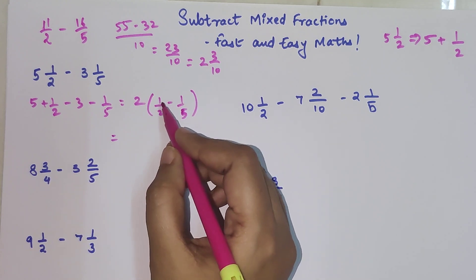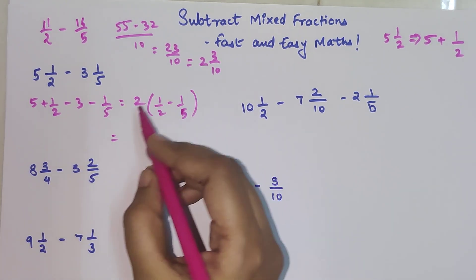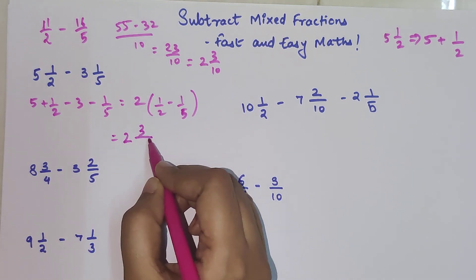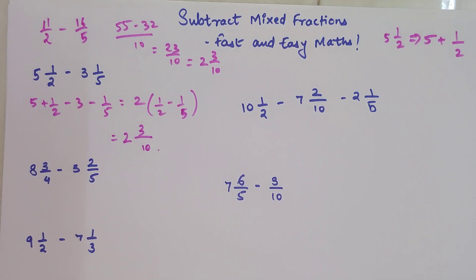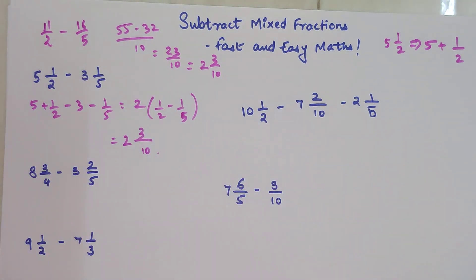We're just going to cross multiply. So 5 into 1 is 5, 2 into 1 is 2. So 5 minus 2 is 3 divided by 2 into 5 which is 10. This is your answer. How the trick works is you just subtract the integer part and then deal with your fractions.